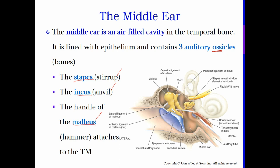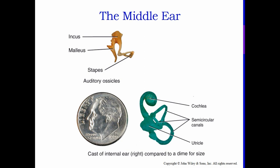Sound waves come down the ear canal, strike the eardrum, and it vibrates like a drum skin. That vibration passes through the malleus (the hammer), then to the incus (the anvil), and then to the stapes (the stirrup). Here's a shot to show how small those bones are — using a dime as reference, all three bones — the malleus, the incus, and the stapes — would easily fit on a dime.